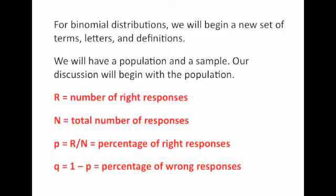Now you need to learn your P's and Q's. P represents the percentage of right responses in the population. Q represents the percentage of wrong responses. If we have 40% of our answers which are right, then we have 100 minus 40%, or 60%, which are wrong. P and Q have to add up to 100%. For the population: kappa R is the number of right responses, kappa N is the total number of responses, P is the percentage right, and Q is the percentage wrong.